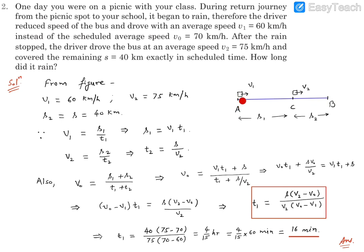Let's say up to point C it was raining, so the bus covered s1 distance at v1 velocity or speed which is 60 km/h. Then after C point rain stopped, so the speed became 75 km/h and the distance that was covered later is s2. s2 is equal to